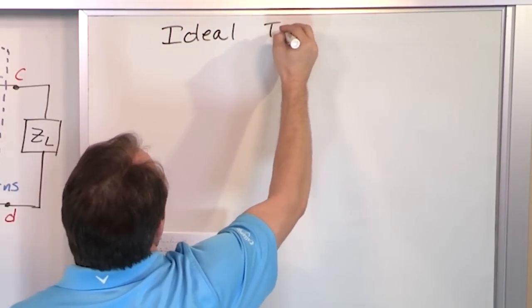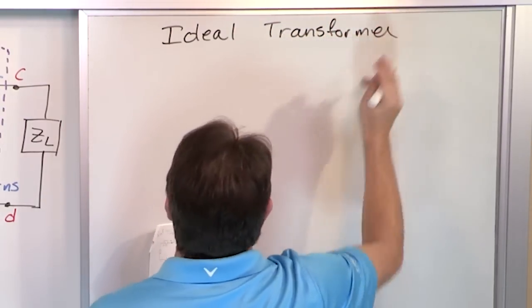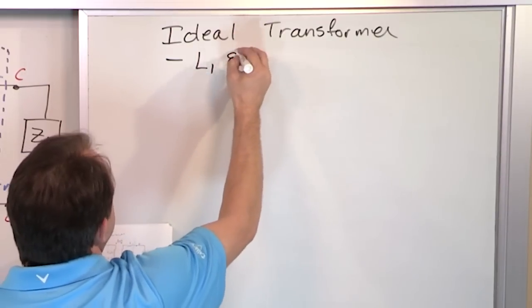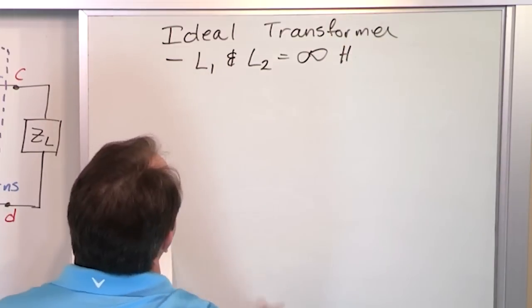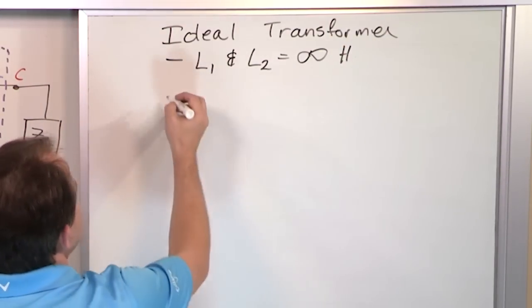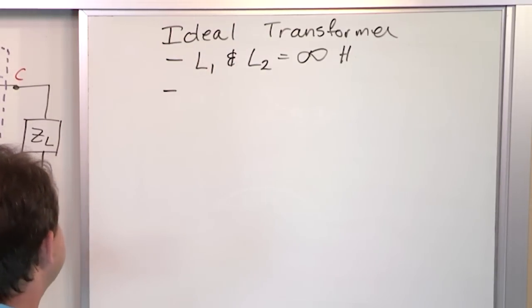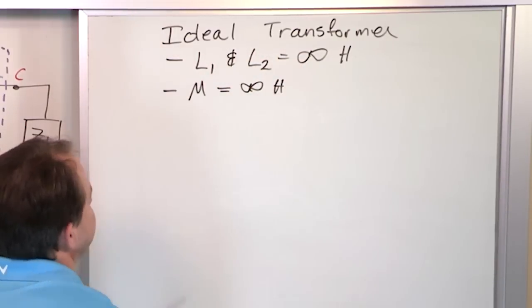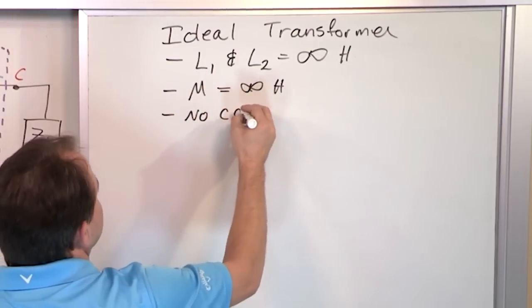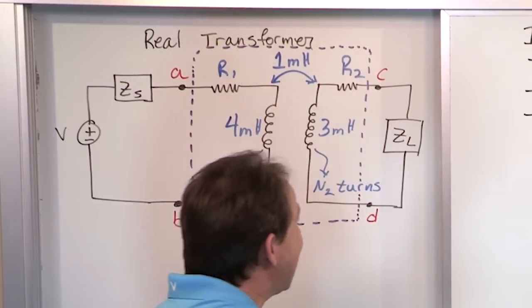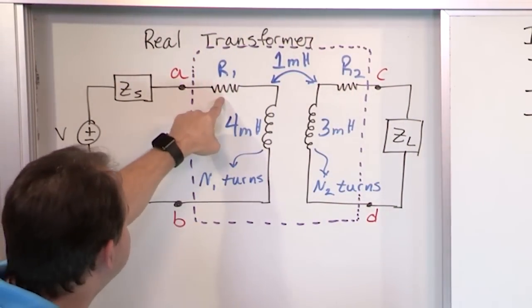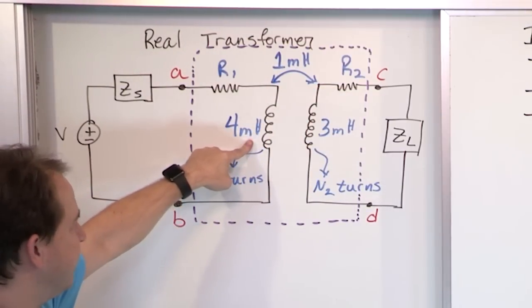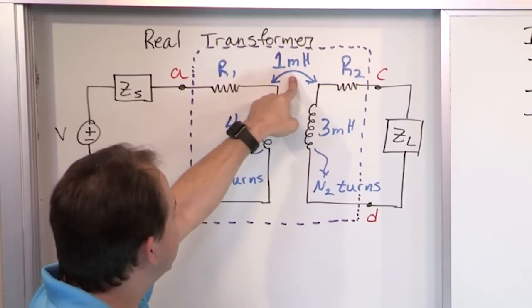So we have the concept of an ideal transformer. How does an ideal transformer differ from the real one? First, L1 and L2 equal infinity henries. In real life you can't get infinite inductances, but in an ideal transformer you can, at least ideally. Second, the mutual inductance between the two coils is also infinity henries. Third, we have no coil losses. So in an ideal transformer, R1 and R2 are zero, the inductances are infinity henries, and M is infinity henries.